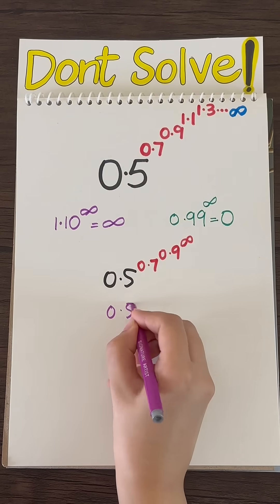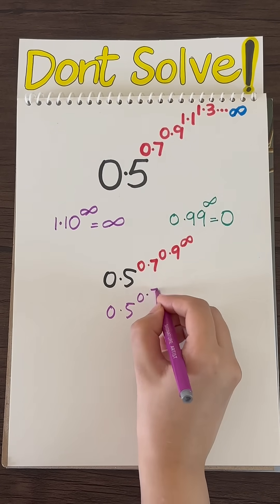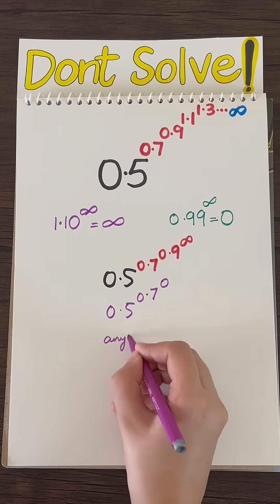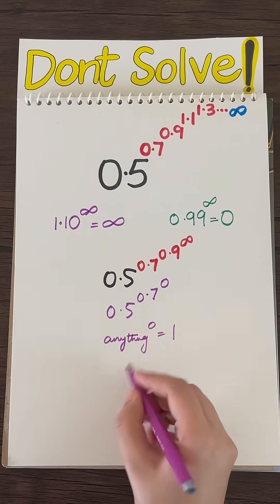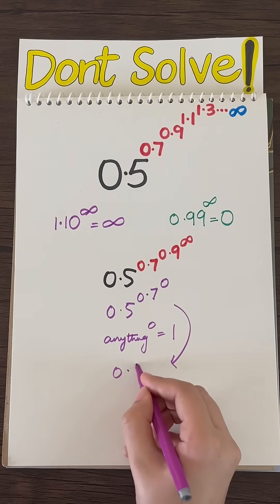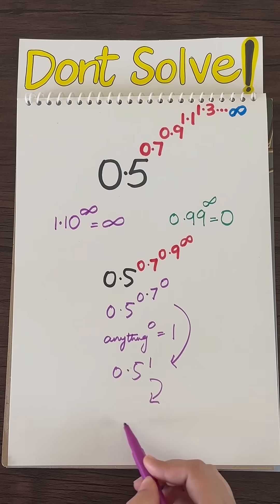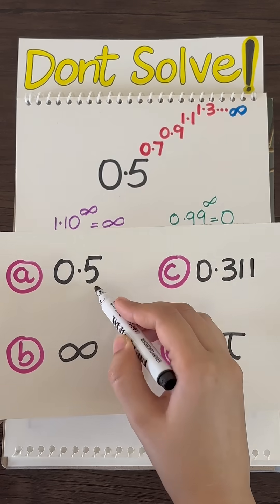Remember what we said about any number less than 1 raised to the power of infinity - it approaches 0. And anything raised to 0 is 1. So this becomes 0.5 to the first power, which equals 0.5. That's option A.